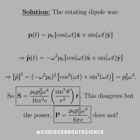When we square P double-dot, it's the same as taking the dot product with itself. The constants get squared, and the x-hat dotted with itself gives cosine squared, and the y-hat terms give sine squared — those sum to one. So the square gives us P naught squared omega to the fourth. Therefore, the Poynting vector equals mu naught P naught squared omega to the fourth over 16 pi squared C, times sine squared theta over R squared in the R-hat direction. The power is mu naught P naught squared omega to the fourth over 6 pi C.